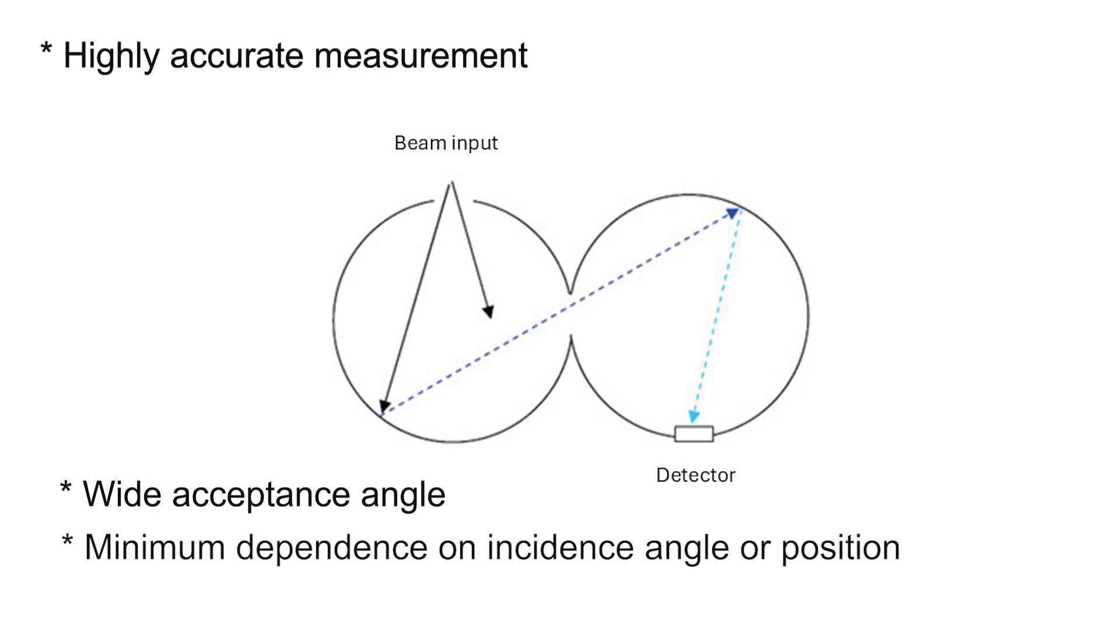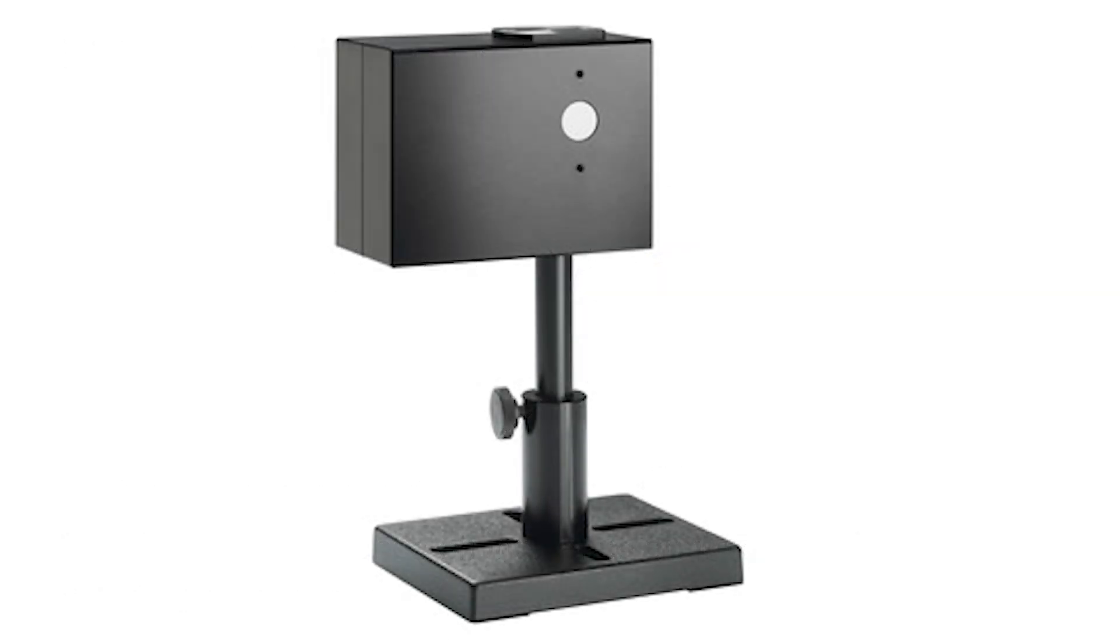The combination of a photodiode detector and the integrating sphere also gives the 3AIS a wide dynamic range. It comes in two models.